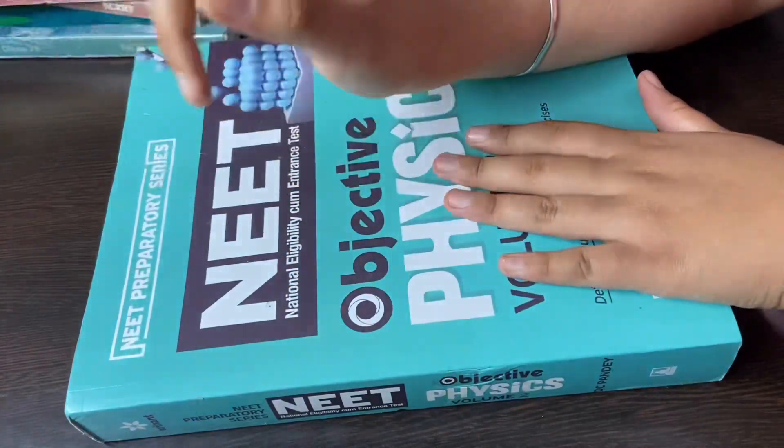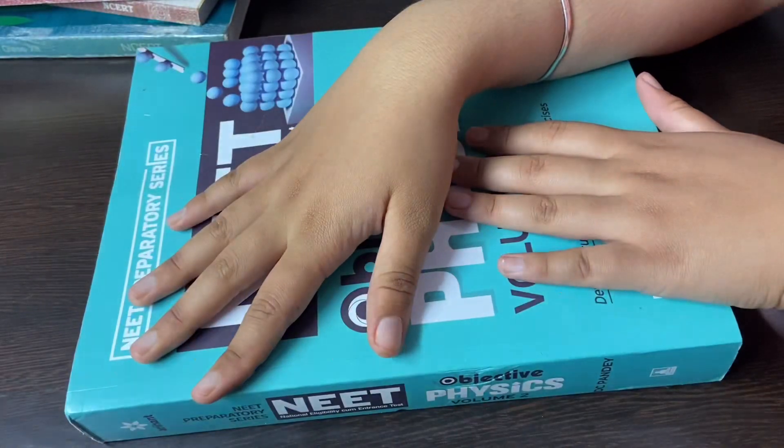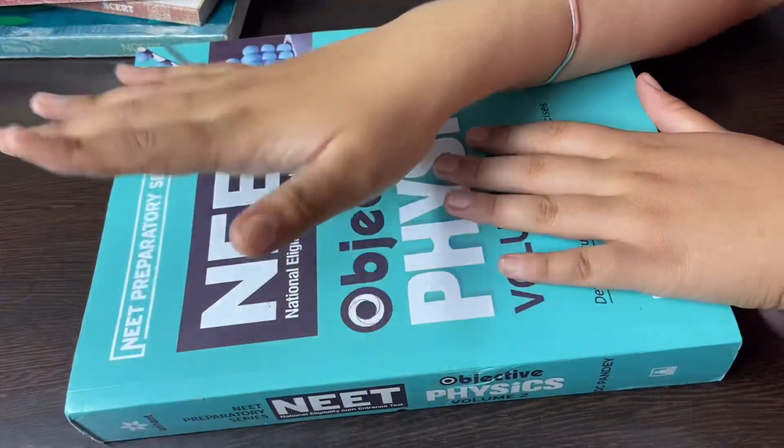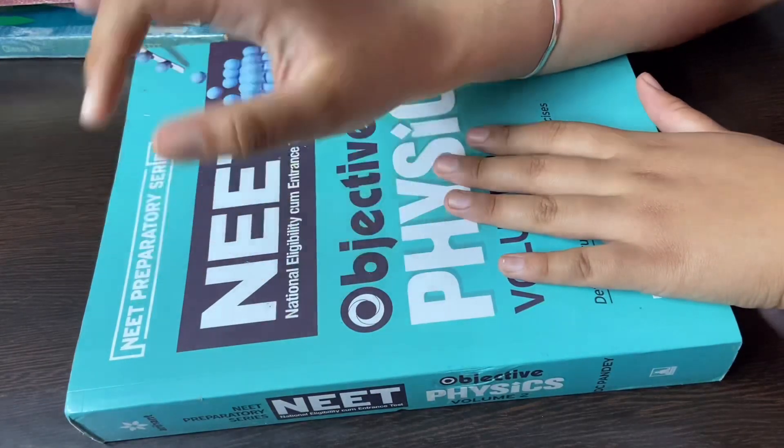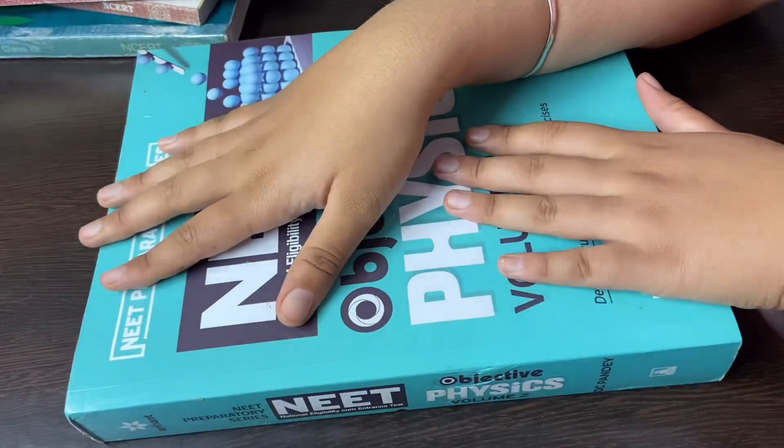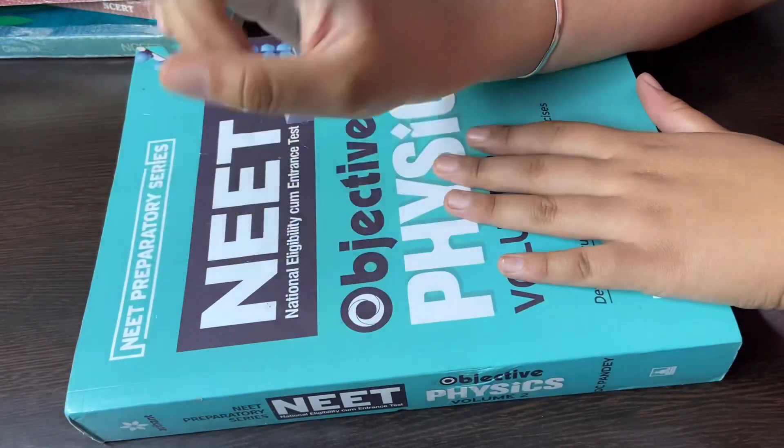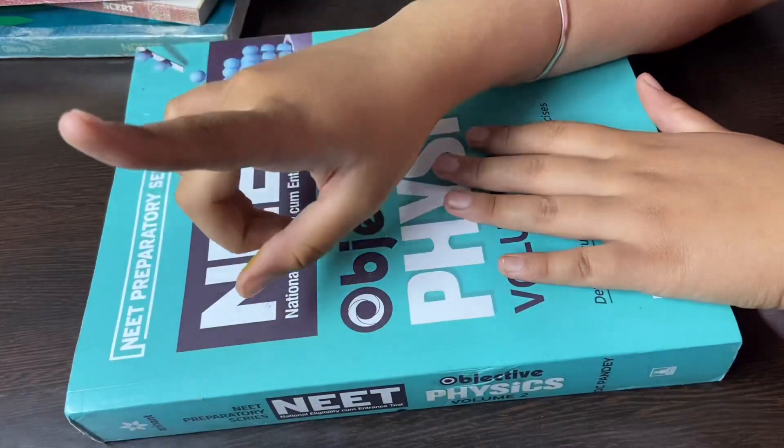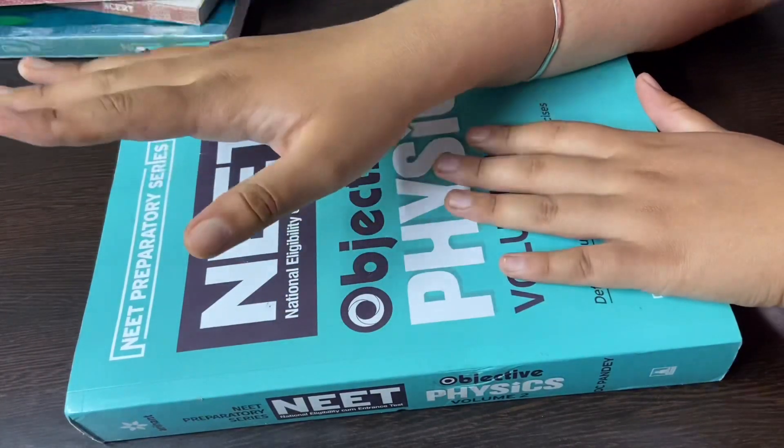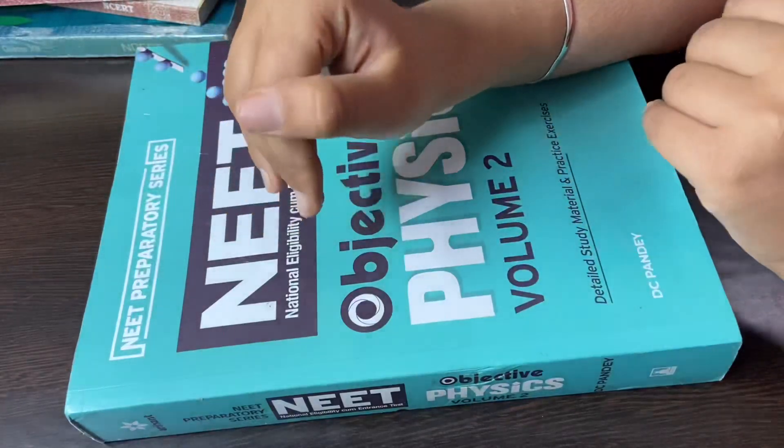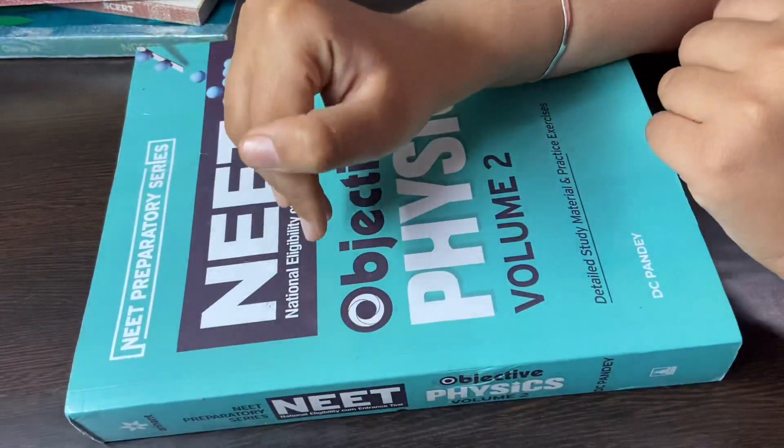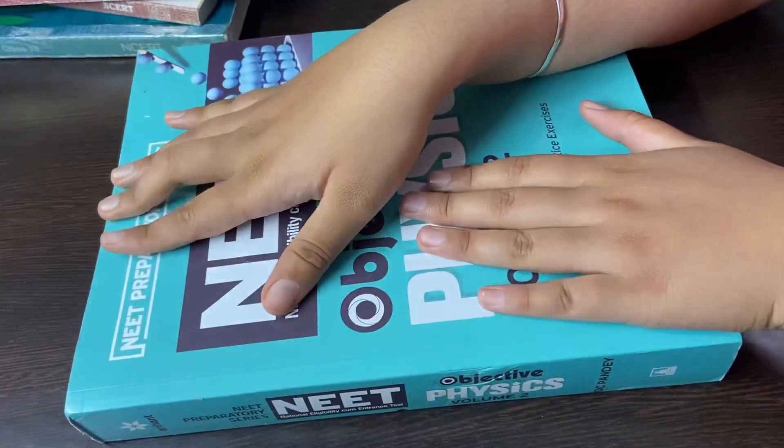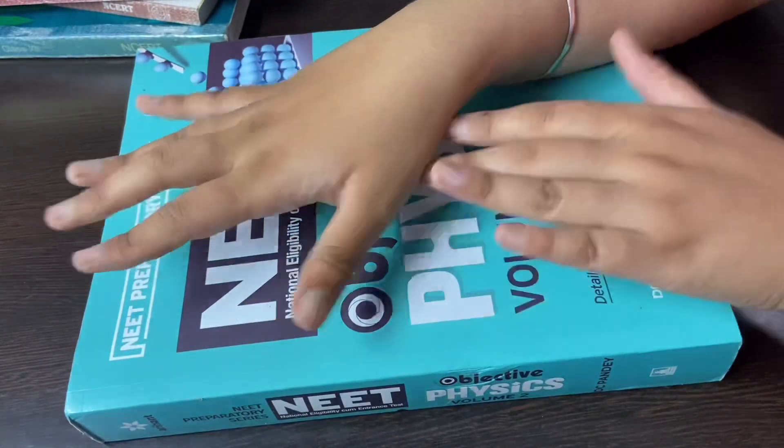That's it for the stationery haul. Actually, there are many things I've ordered but they're still on the way. I've also ordered a bullet journal - I'm going to start bullet journaling. I don't know how it will go, but I'm going to start it. I got a bullet journal from Factor Notes on Amazon. When it arrives, you'll definitely see it in my videos. I will also link everything down in the description box below, just in case you guys want to buy any of these things. That's it for the stationery haul. I'll see you in a new video very very soon. Bye bye!